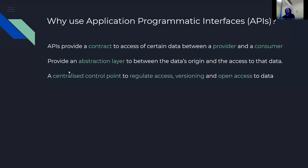Thirdly, having a centralized control point lets you regulate access, versioning, and open access to that data. In networking, if everyone is making API calls to all your different API-enabled network devices from everywhere, you have to regulate all that access. If API versions change on those products, you have to deal with that. Using an API to centralize things lets you manage versioning and back-end connectivity in one place. It also means you don't need to give people direct access to systems like Cisco ACI or F5 load balancers — you can abstract away giving them user accounts on those systems.